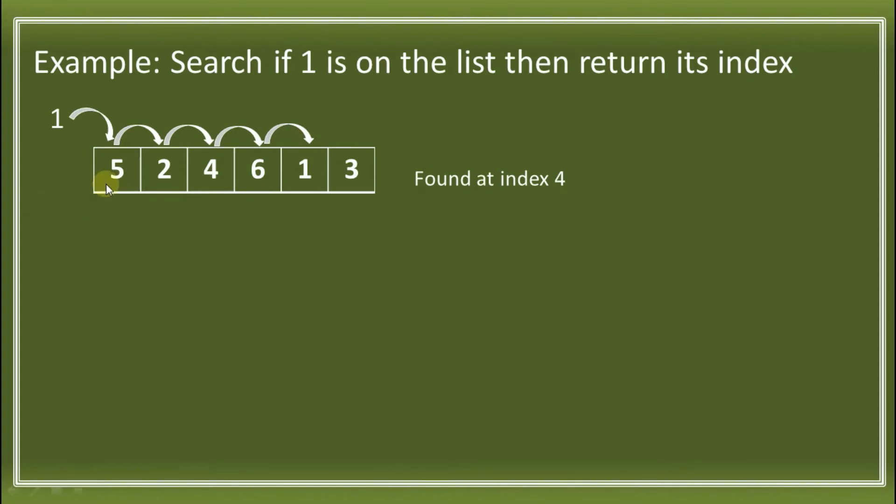Why index 4? An array starts with index 0. So, this 5 is 0, 1, 2, 3, 4. So, 1 is found at index 4.